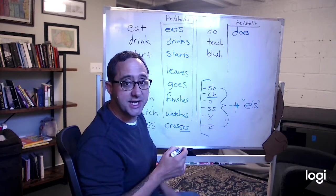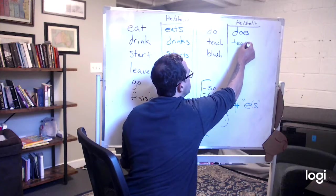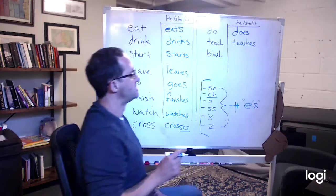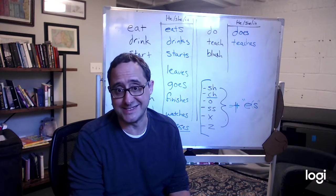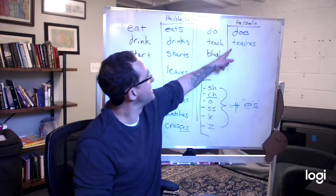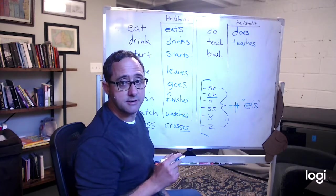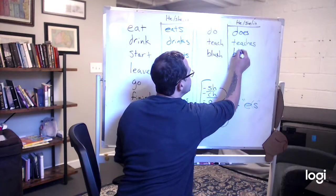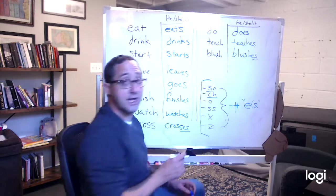I teach. He or she or it teaches. Teaches. And when there's an E, it's always Z. Teaches. Blush. See the S H? He blushes. He blushes. Blushes.